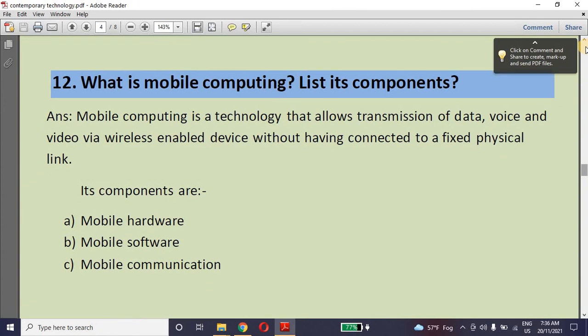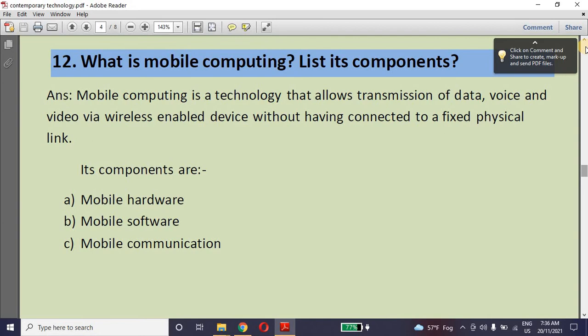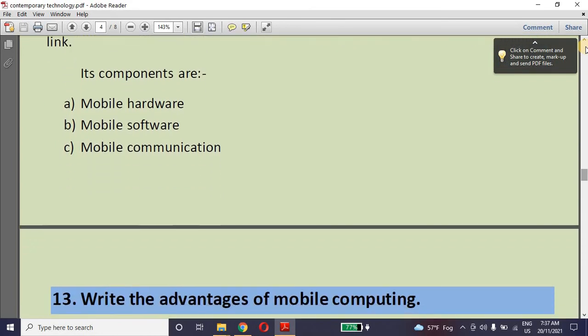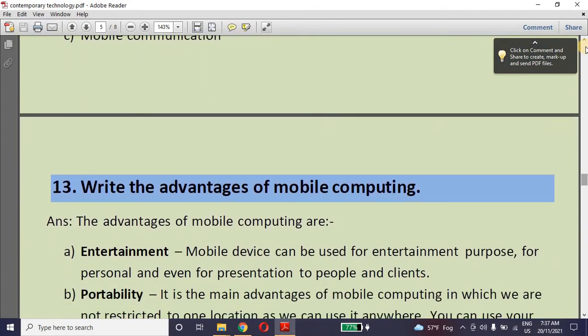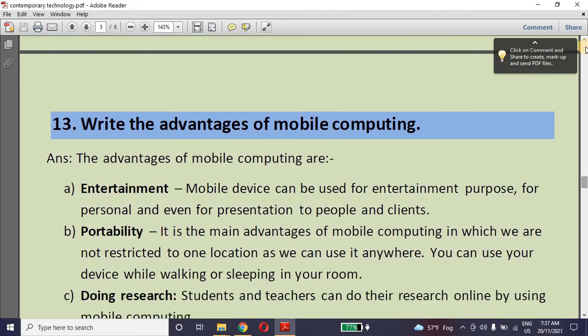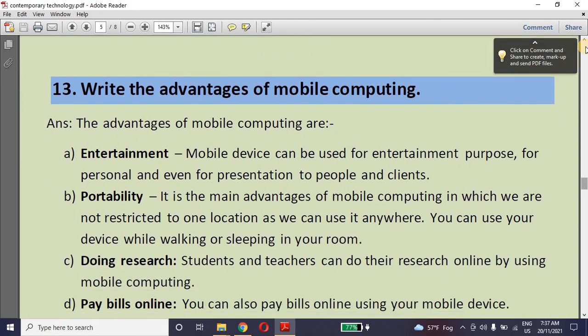This is mobile computing. Inside mobile, what we have? We have hardware, we have software, and communication. We do communicate. We call through SIM call, we can do video call after connecting our mobile device to internet. We can share data. That is communication, that means exchanging of data by sending or receiving anything. Data means file, photo, audio, video, sending messages and all these are the advantages of mobile computing.